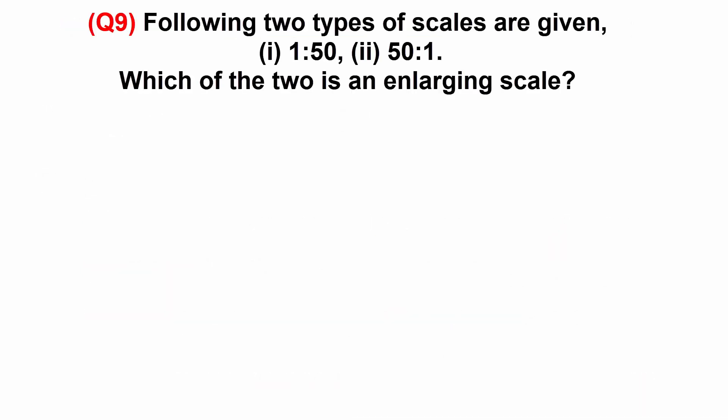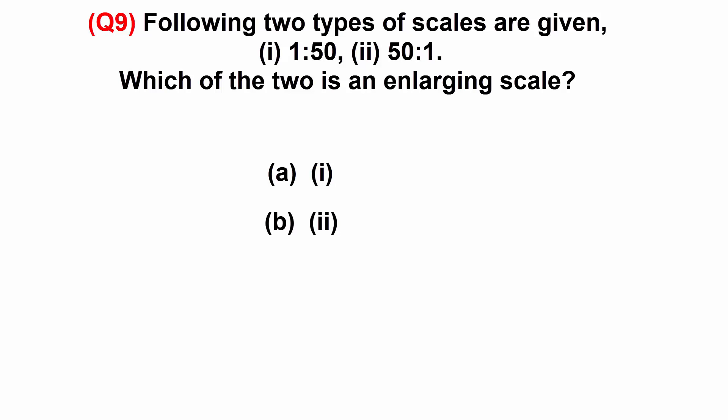Following two types of scales are given: one — 1 is to 50, two — 50 is to 1. Which of the two is an enlarging scale? A: one. B: two. C: both one and two. D: none of them.